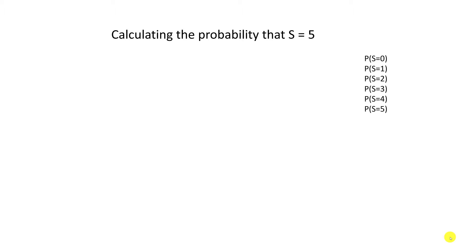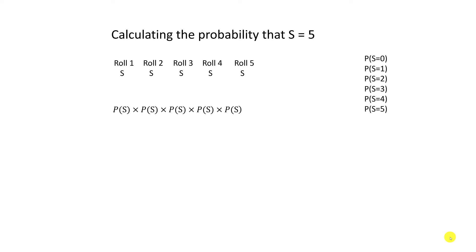Let's start with the values that are easiest to calculate. The easiest one is the probability that the number of successes equals five — in other words, every one of the five rolls is a six. So we get a six on roll one, roll two, roll three, roll four, and roll five — success each time. The probability of getting that sequence is the probability of success on each roll multiplied together, because those are independent. That's just one-sixth to the power of five, which equals that value. So we can fill in that value.